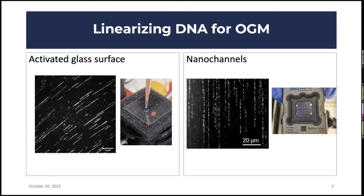To do optical genome mapping, first we have to linearize DNA. There are two ways we tried in our lab. One uses an activated glass surface — dragging a droplet containing DNA, for example E. coli, on the surface, and the DNA molecules stretch in straight lines due to the motion. Another way is a chip from Bionano Genomics containing thousands of nanochannels into which DNA molecules linearize by pressure and electric field.